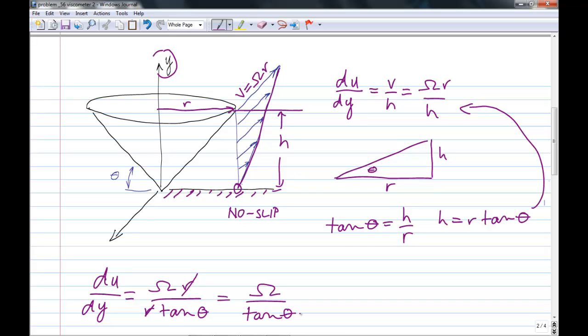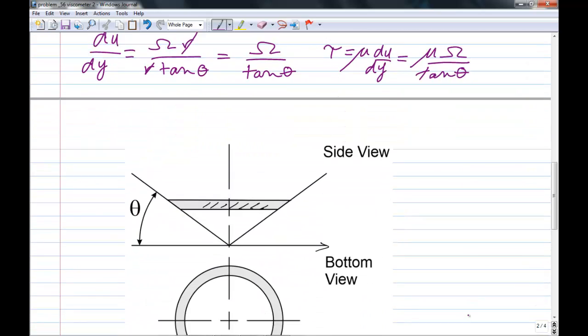Now we're going to assume a Newtonian fluid. So we can now calculate the local shear stress. Tau equals mu du/dy. And so this becomes, assuming a Newtonian fluid, that the shear stress is proportional to the velocity gradient, and the constant of proportionality is the dynamic viscosity. Then we get mu omega over tan theta.